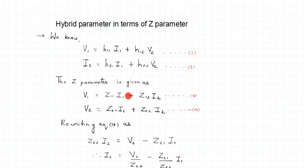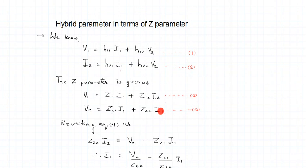To convert hybrid into Z, we need to look into the Z parameter equations and identify which equation could have a closer match with the hybrid parameter. Looking closely at the Z parameter equations — equation 3 and equation 4 — we observe that in equation 4 we have parameters like V2, I1, and I2. Similarly, equation 2 also has similar parameters: I2, I1, and V2.